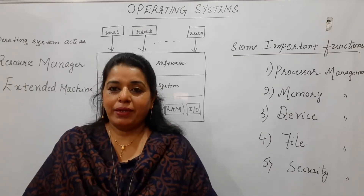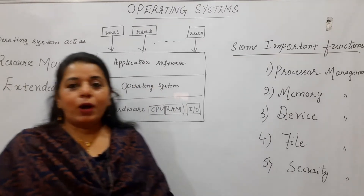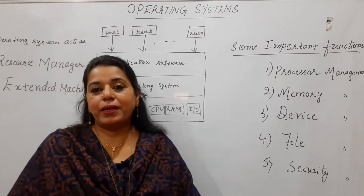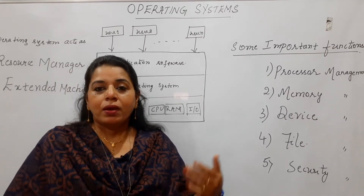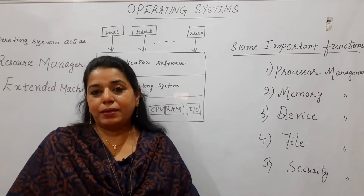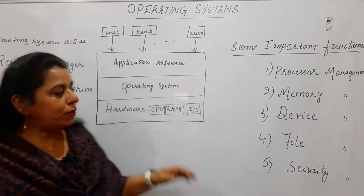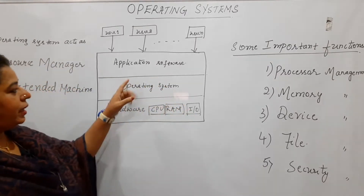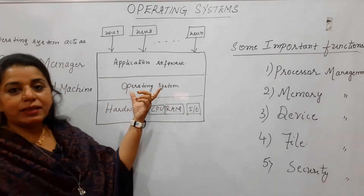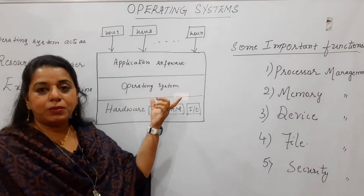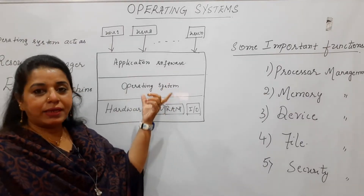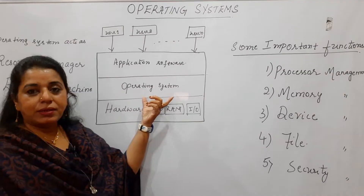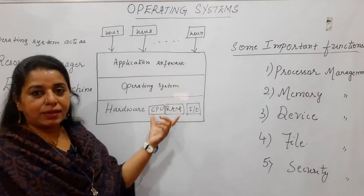What is an operating system? An operating system is an interface between the user and the machine. Look at this diagram — it will definitely help you in understanding where exactly this operating system is used and where it lies in the overall architecture.